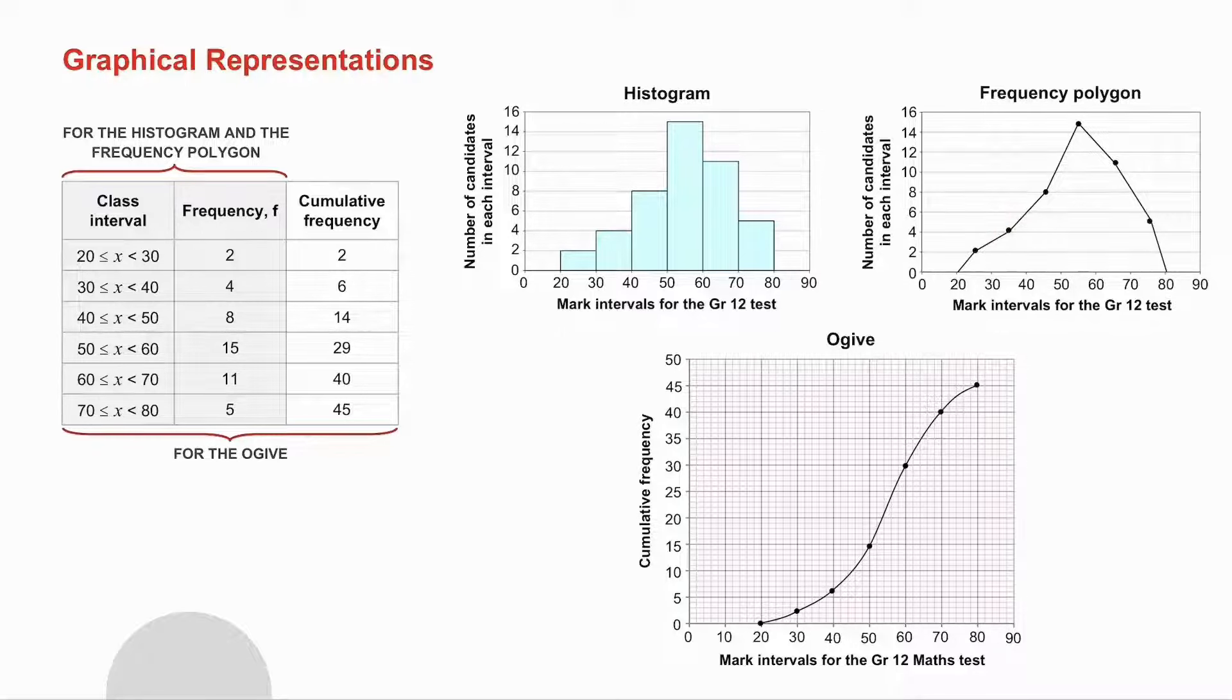And then what I have to do is I have to complete it to the lowest value. So I must connect it down to the x-axis 20 and the upper value at 80. You must complete that frequency polygon. In both of these two your modal class is the one that has the highest frequency.